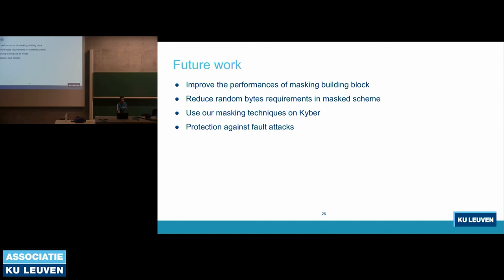For future work, it would be valuable to improve the performance of masking building blocks, especially the A2B and B2A conversion algorithms, which are the main bottlenecks. Another good research direction is to reduce the random bytes requirement in masking schemes. Additionally, applying our masking techniques to Kyber is a natural direction. Finally, another practical threat is fault attacks, which exploit implementation vulnerabilities of cryptographic schemes and which masking cannot prevent — and can sometimes make worse. Protecting post-quantum schemes against fault attacks is an important open direction.